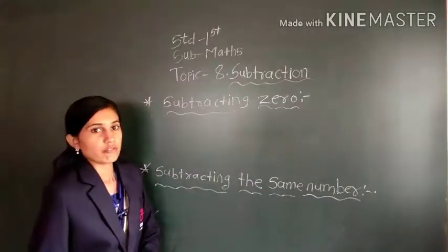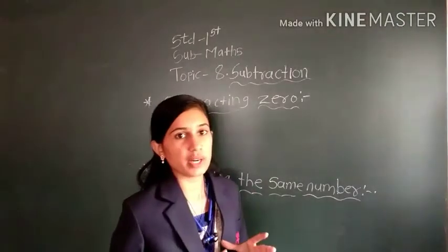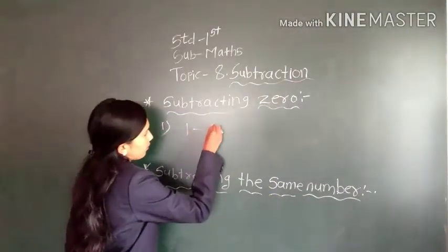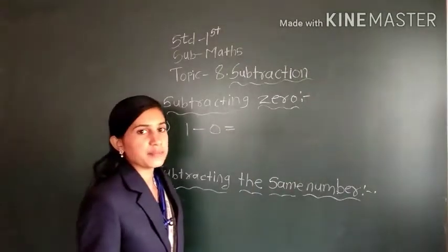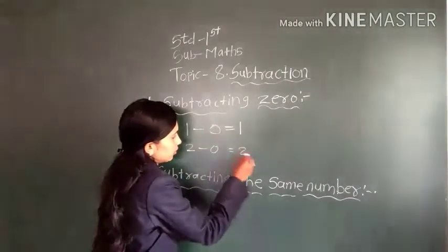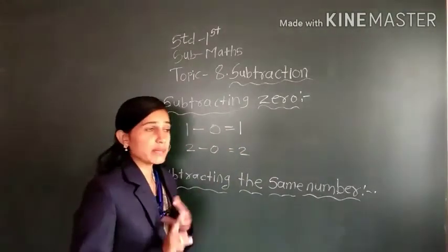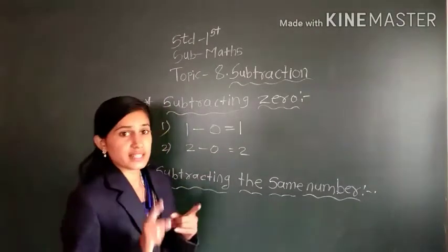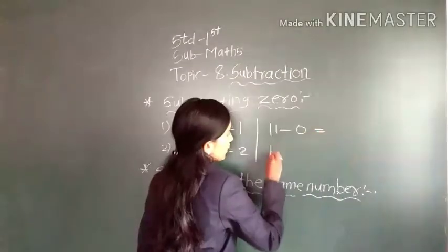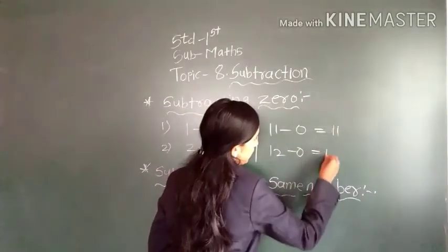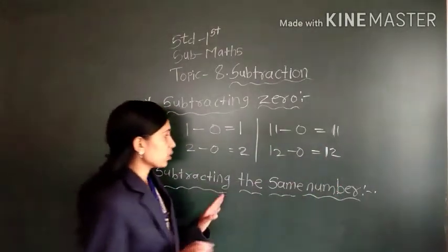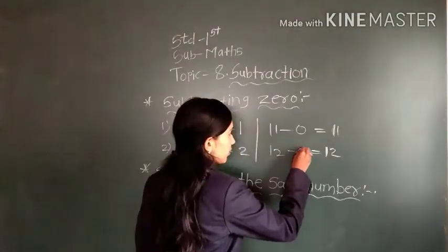Subtracting zero: when we subtract zero from any number, the same number is the answer. First example: one minus zero is equal to one. Second: two minus zero is equal to two. When we subtract zero from any number — eleven minus zero, twelve minus zero — the answer is eleven and twelve. The given number itself is the answer. If we subtract zero from any number, we get the same number as the answer.